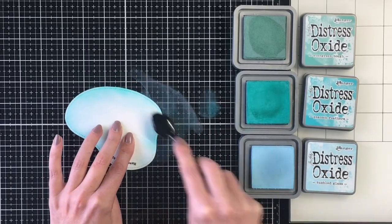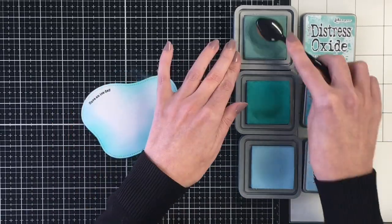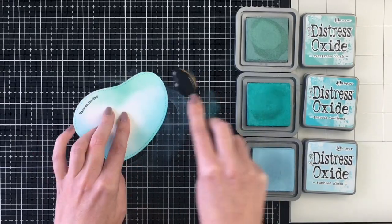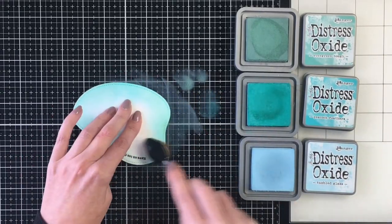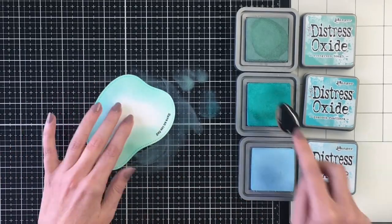So I am doing the evergreen bough along the edges and then bringing that peacock feathers in to blend that out. And then I wanted the tumbled glass to be in the center.